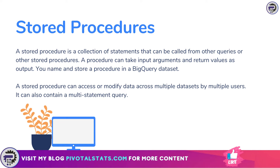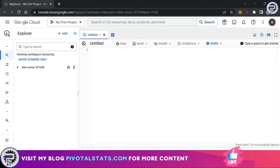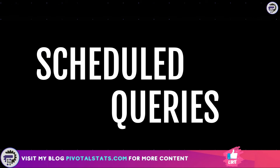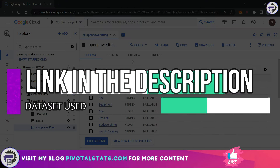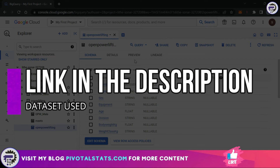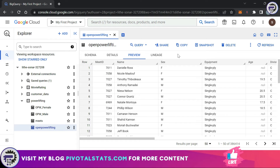You can do that using scheduled queries in BigQuery. The second topic is stored procedures, which help you create a routine of multiple queries grouped together that can be run in a single go. Now let's jump into it. To kick things off, we'll start with scheduling a query. Here's the scenario: we have a table called Open Powerlifting, and the link will be in the description if you want to download the data.